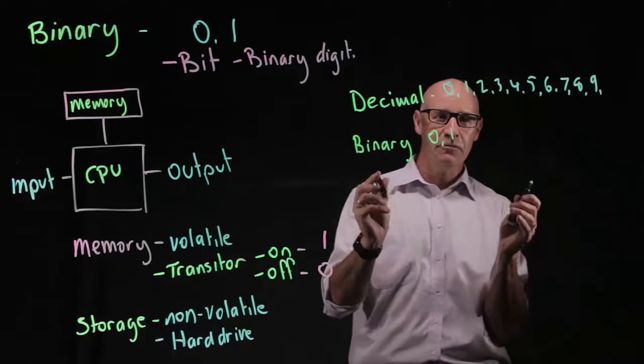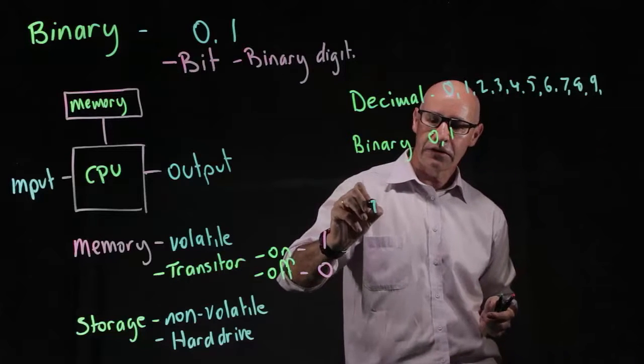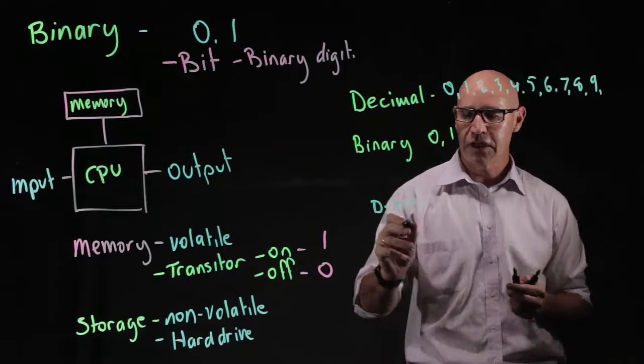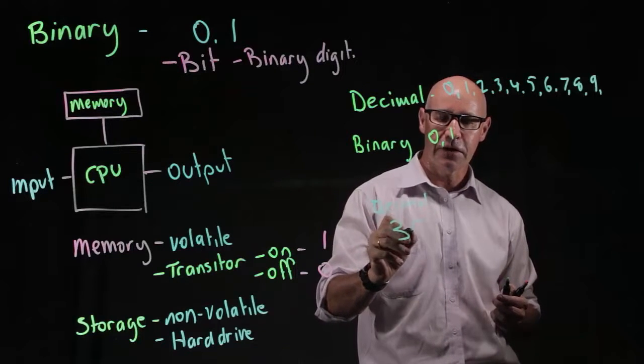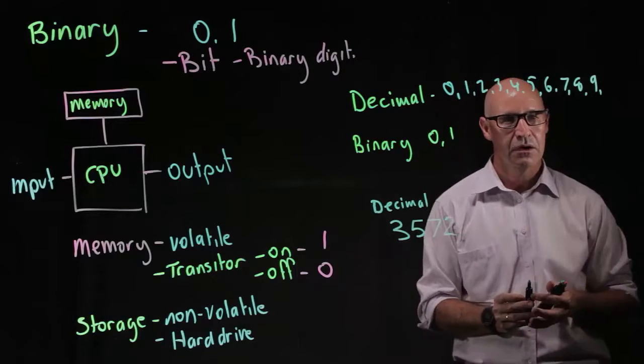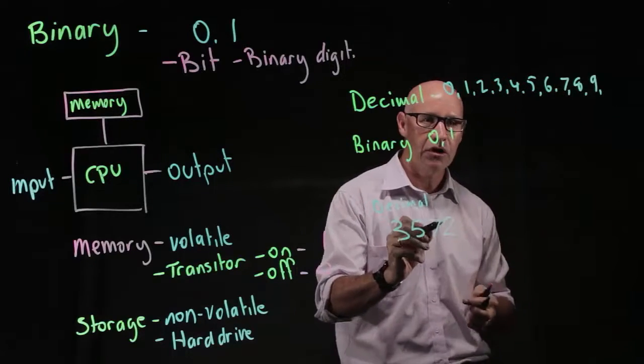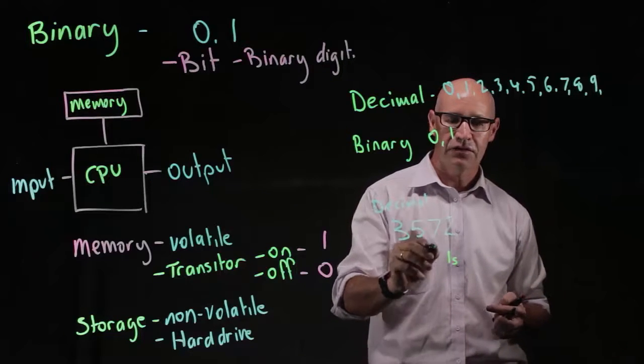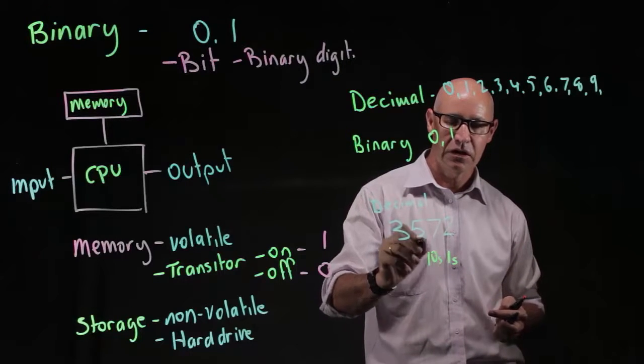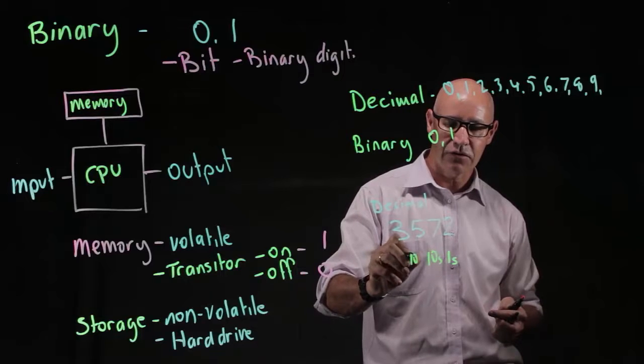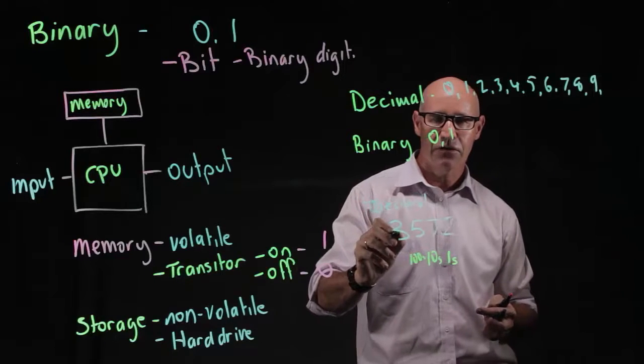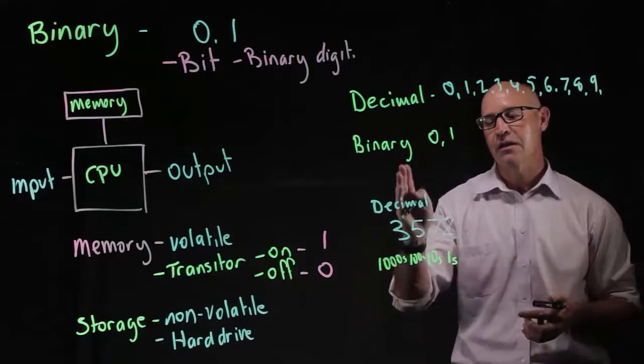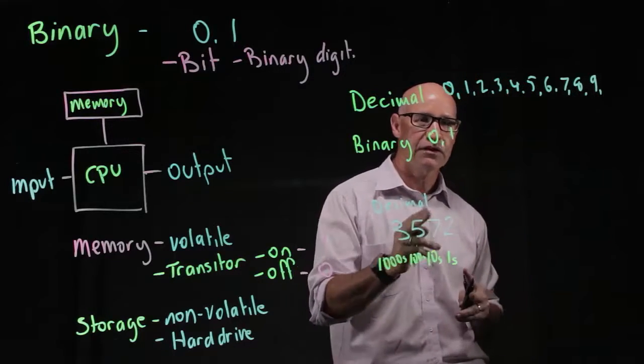Let's have a look at a decimal number. So this is in decimal. Let's see the number 3572. Now, as you know, the two is in what we call the ones column. The seven is in the tens column. The five is in the hundreds column. And the three is in the thousands column. So we can easily read that 3572.